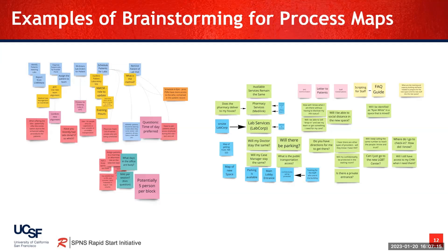On this slide, you'll see some examples of some brainstorming for process maps. As you can see, there are not a lot of arrows on these maps. Primarily what you see are ideas, sticky notes, steps in the process, questions people have about the process. After creating this brainstorm step is when a team would then begin to move these individual stickies into a linear process describing their as-is state.